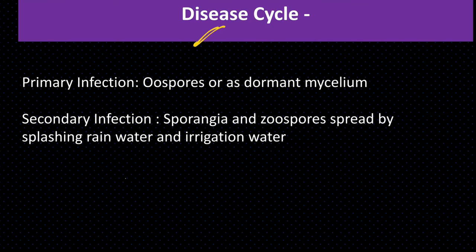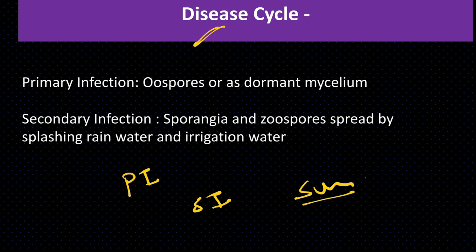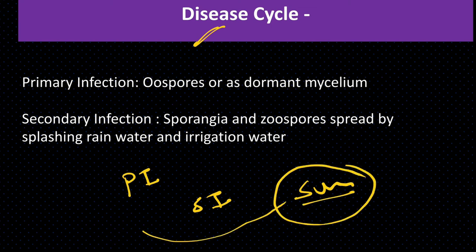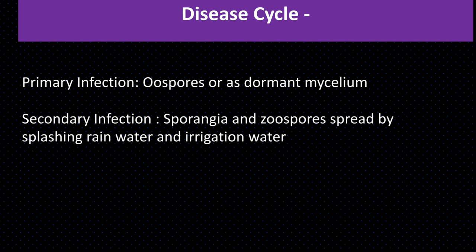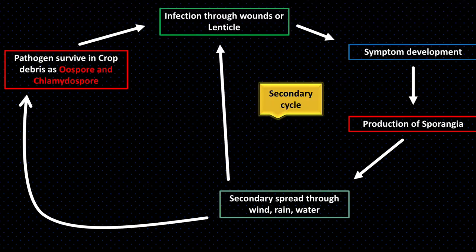Disease cycle has three important points: primary infection, secondary infection, and survival. The part of the pathogen that survives acts as the primary inoculum and carries out primary infection. After primary infection, new spores are produced which cause secondary infection. The pathogen survives in crop debris and infected plant parts as oospores and chlamydospores.